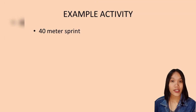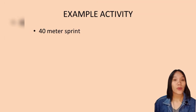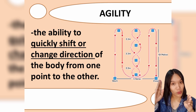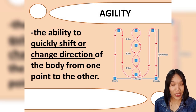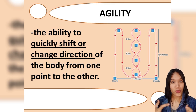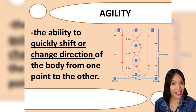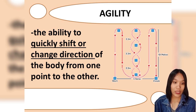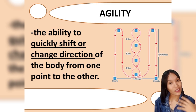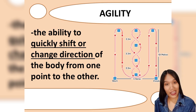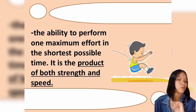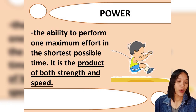Speed involves moving from one point to another, but agility adds changes in direction. Agility is the ability to quickly shift or change the direction of the body from one point to another while also moving fast. An example activity for measuring agility is the hexagon agility test.